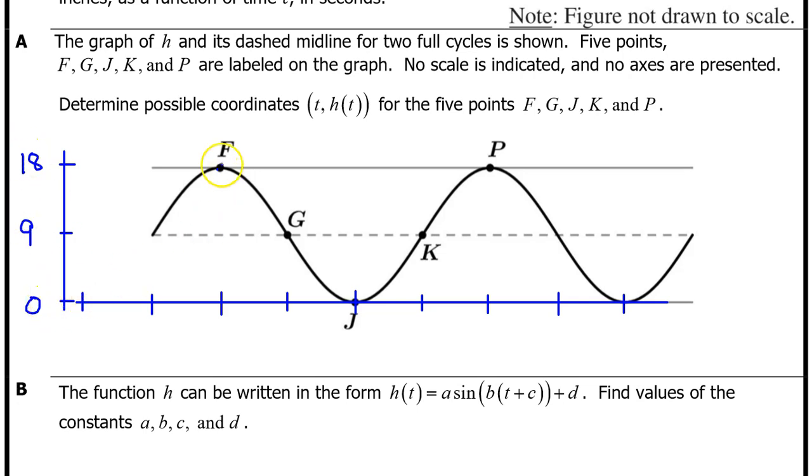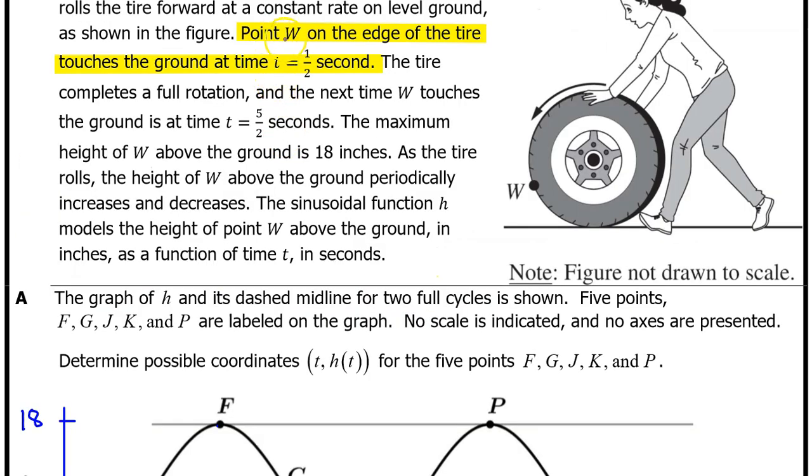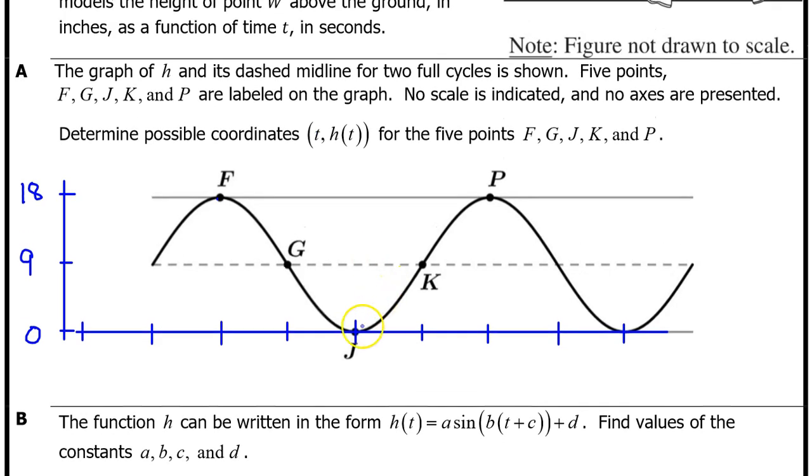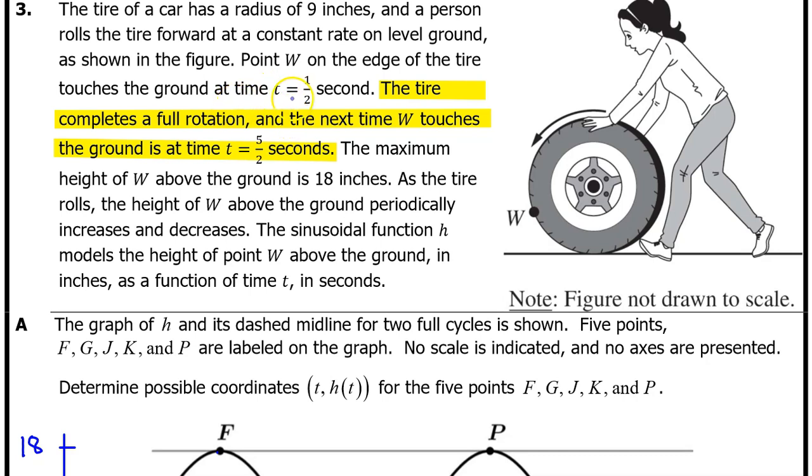We have found the output values for all five points. Now, let's see if we can find the input values. We are told that point W touches the ground at time t equals 1 half, so we need to pick one of these low points and call it t equals 1 half. We can either let the input value of point J be 1 half, or we could put the 1 half way over here, or we could extend the graph by 1 quarter of a period and let that input value be the 1 half. That's what I'm going to do. This will allow me to avoid negative input values.